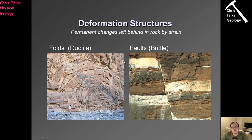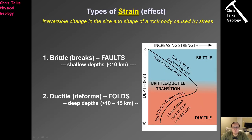We know that rocks will deform in one of two ways: ductile or brittle. Ductile deformation will result in folds, and brittle deformation will result in fractures, which can turn into faults. Brittle and ductile deformation are restricted to different levels of the Earth's crust. In the top 10 kilometers, you are more likely to get brittle deformation because the rocks are cold and relatively strong. Below that, typically about 10 to 15 kilometers down, we move into the ductile field.